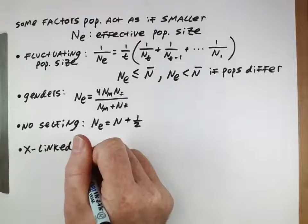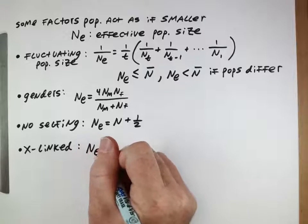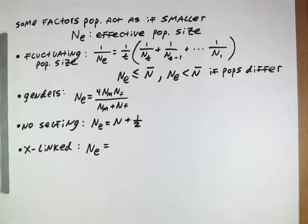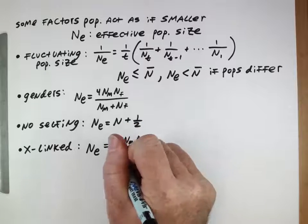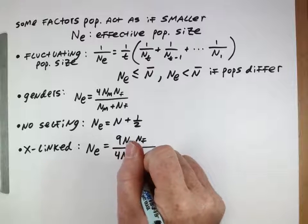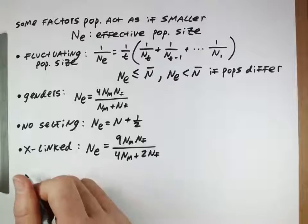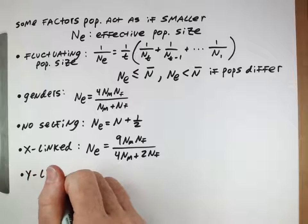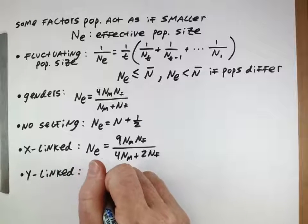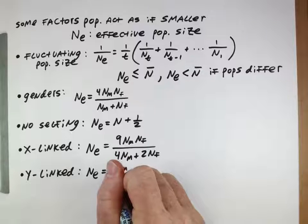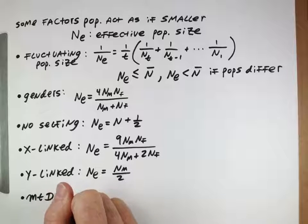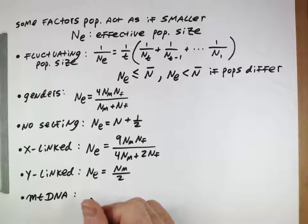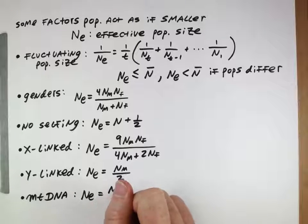If the alleles are X-linked — so we're thinking about how quickly genetic diversity gets lost from loci on X chromosomes — the effective population size is 9 times the number of males times the number of females, all divided by 4 times the number of males plus twice the number of females. If it's Y-linked, for loci on the Y chromosome, the effective population size is just the number of males divided by 2. For mitochondrial DNA, which is transmitted from mothers to offspring but not by males, the effective population size is the number of females divided by 2.